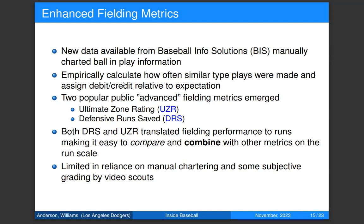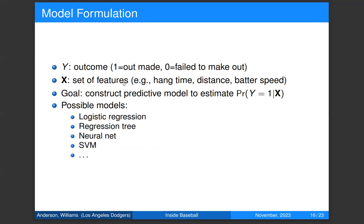There were still major challenges: it relied on manual charting and often subjective grading by video scouts, who would rate plays as impossible, hard, or easy. The general modeling structure is pretty simple at its base — the outcome is whether an out was made or not. Features for an outfield ball include hang time, distance the fielder needs to move, and potentially batter speed. We want to construct a predictive model to estimate the probability an out is made given these features. You'd ideally start simple, then add complexity, since we're delivering these to coaches and executives who benefit from interpretability.